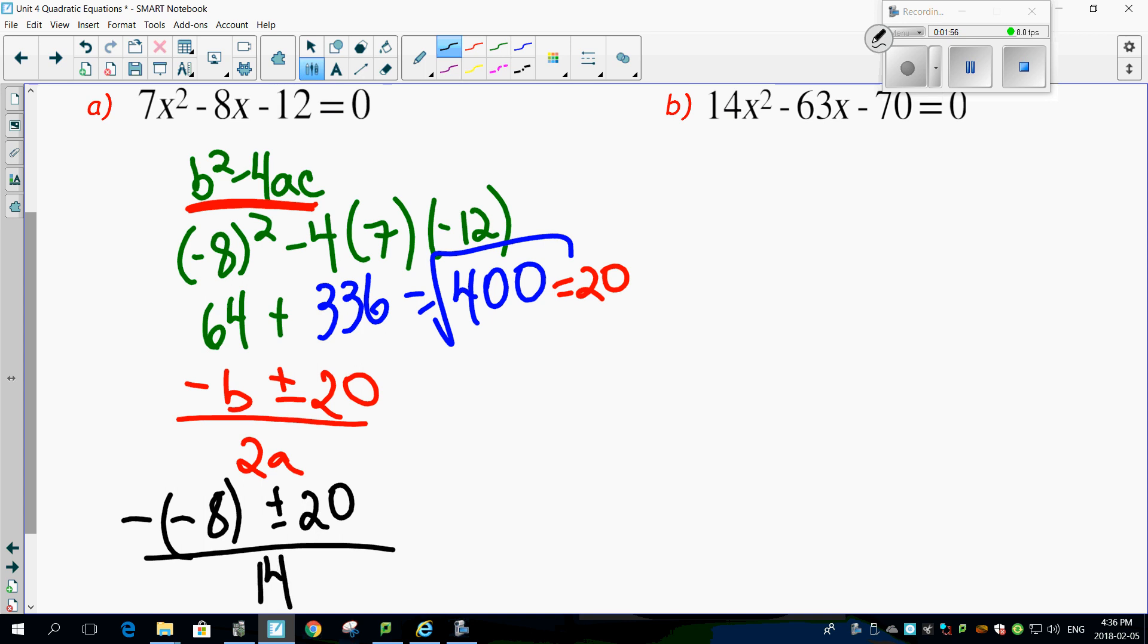Do it twice. 8 plus 20 over 14, and 8 minus 20 over 14. 8 plus 20 over 14. That works out to be 28. 28 over 14, which works out to be 2. One of your roots is 2.